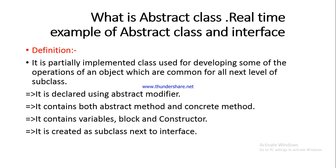In contrast, in an interface you can declare only abstract methods and variables. But in an abstract class you can declare variables, blocks, and constructors as well. An abstract class is created as a subclass next to the interface — meaning if you implement an interface according to the customer's requirements, you can use the abstract class as a subclass next to the interface. This is the theory regarding abstract class, but a real-time example will help you understand the difference between interface and abstract class.